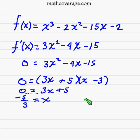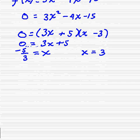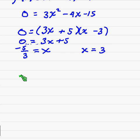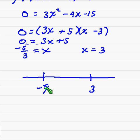So we've got our critical numbers. So I'm going to draw a number line. I'm going to put 3 over here and negative 5 thirds over here. Now I'm going to pick some test points. How about negative 2? And 0 is always a good one. And how about 4?